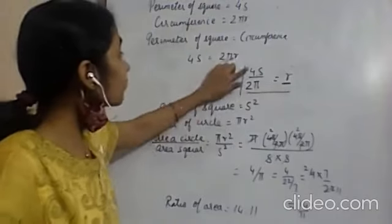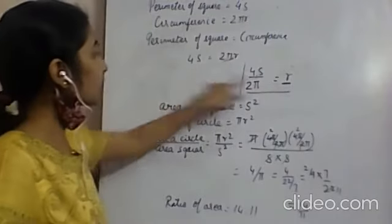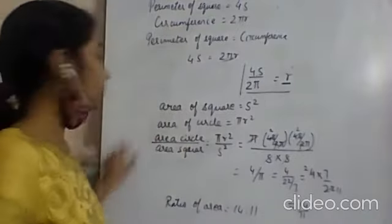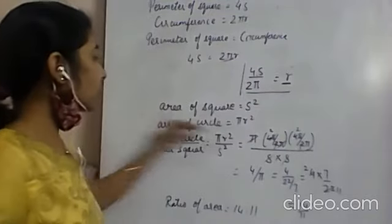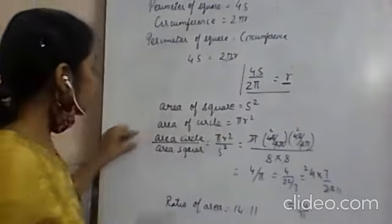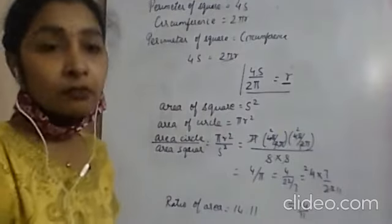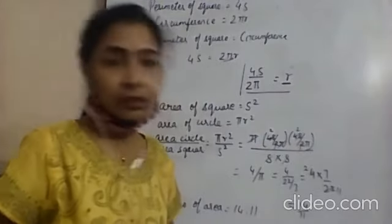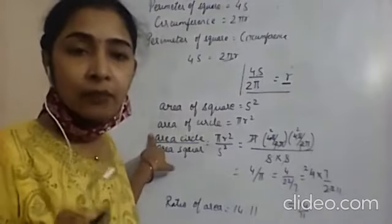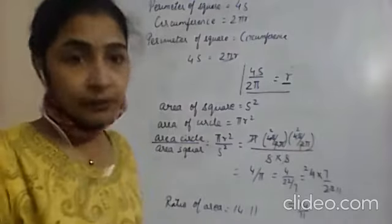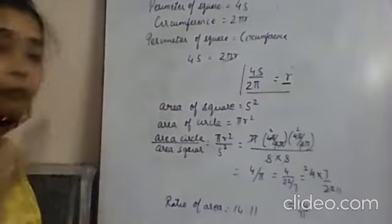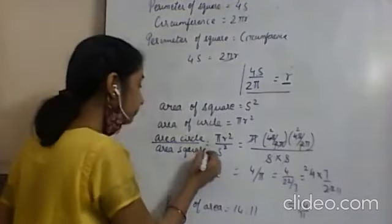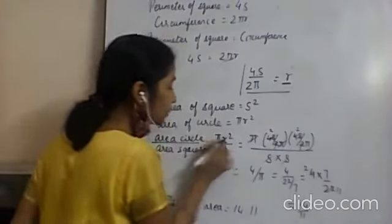Then I took the ratio of area of circle upon area of square as πr² upon s², substituted the value of r, and simplified to get the ratio 14 : 11.